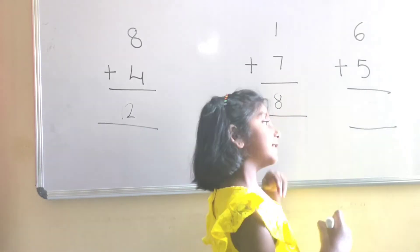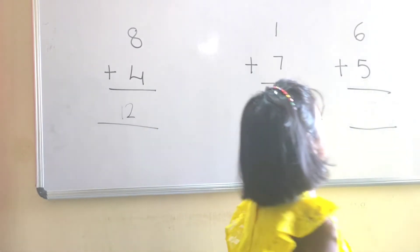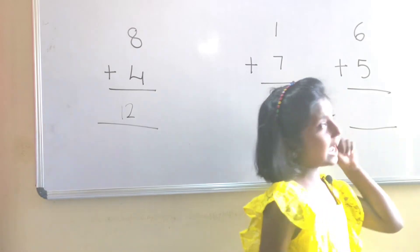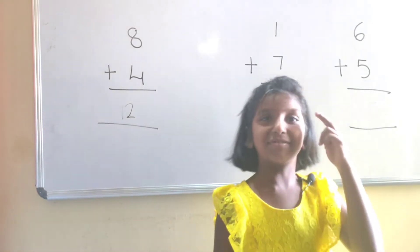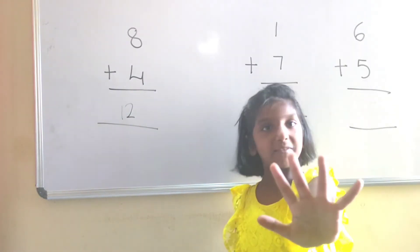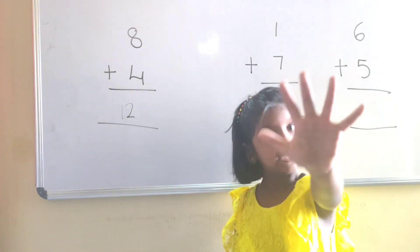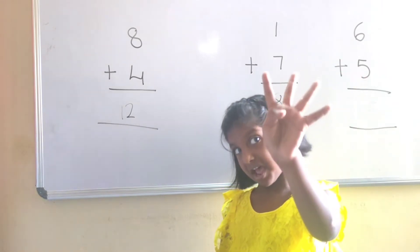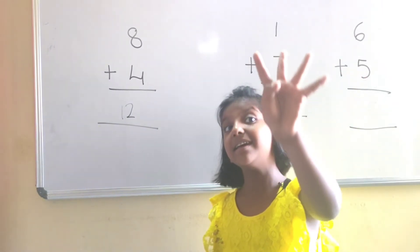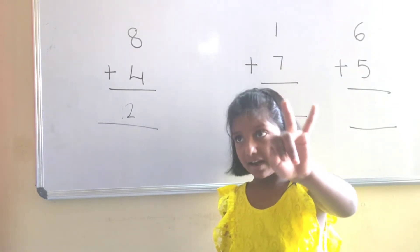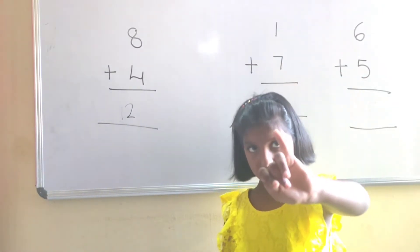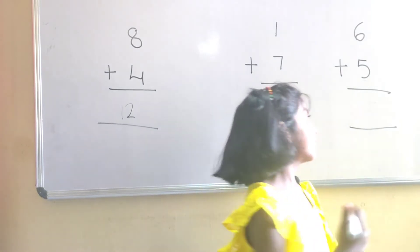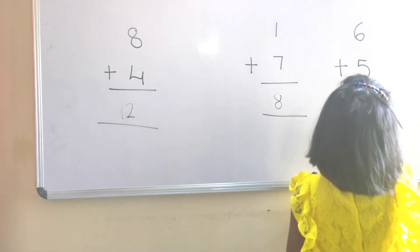Now, let us see the next problem. That is 6 and 5. 6 in mind, 5 in hand. 6, after 7, 8, 9, 10, 11. The answer is 11.